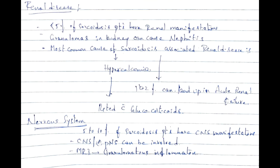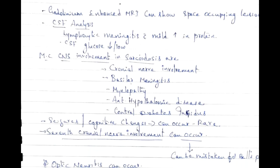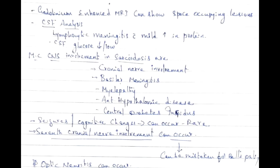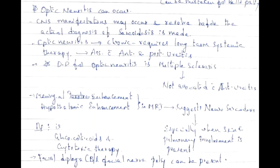Five to ten percent of sarcoidosis patients have CNS manifestations — central or peripheral. MRI shows granulomatous inflammation; gadolinium-enhanced MRI can show space-occupying lesions. CSF analysis shows lymphocytic meningitis with mild protein increase and low glucose. Most common CNS involvement includes cranial nerve involvement, basilar meningitis, myelopathy, anterior hypothalamic disease, central diabetes insipidus, seizures, and cognitive changes. Seventh nerve involvement can mimic Bell's palsy — always rule out sarcoidosis with chest X-ray before diagnosing Bell's palsy.